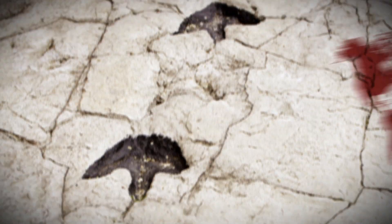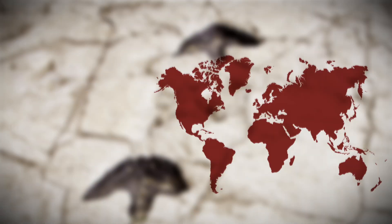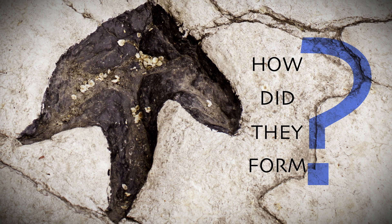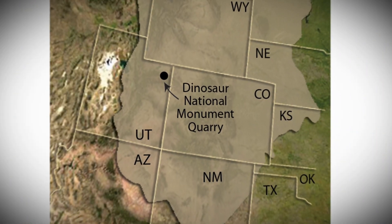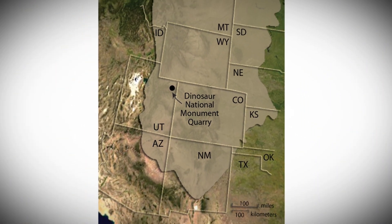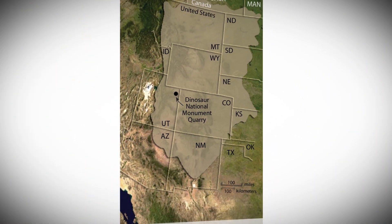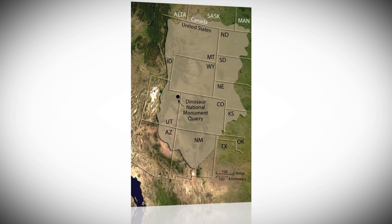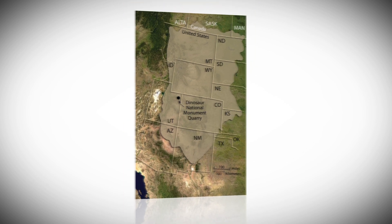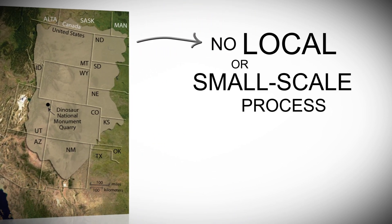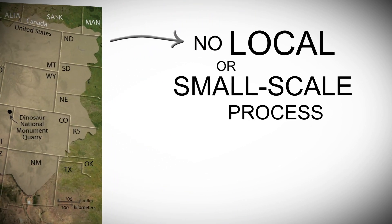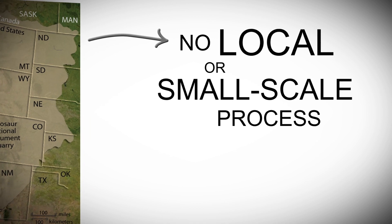Did you know that dinosaur tracks can be found on every continent? But how did they form? Well, you need lots of mud. And because rock formations with tracks often extend over large regions, no local or small-scale process explains the tracks we see.